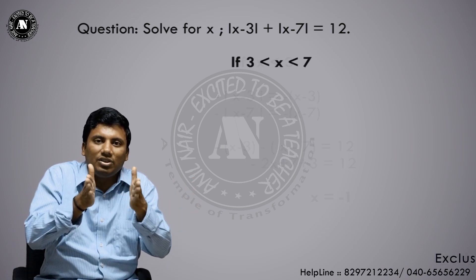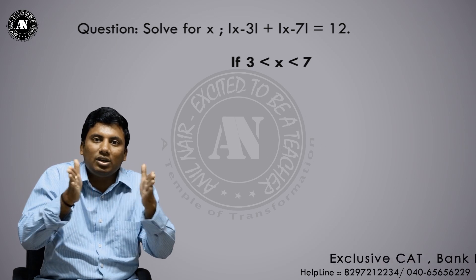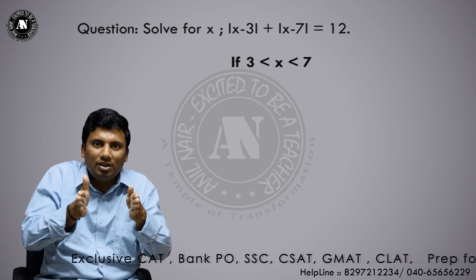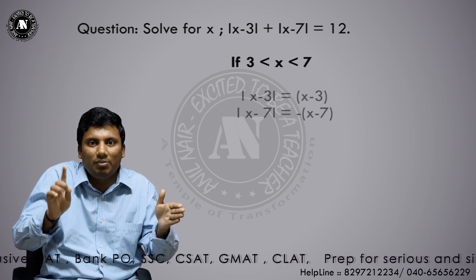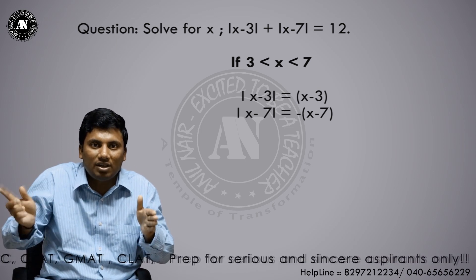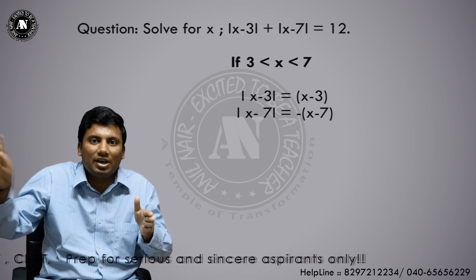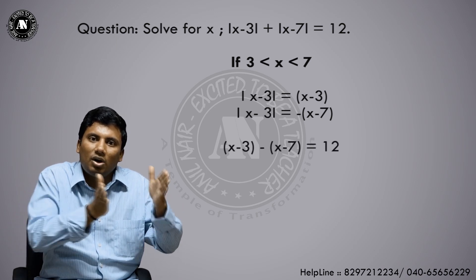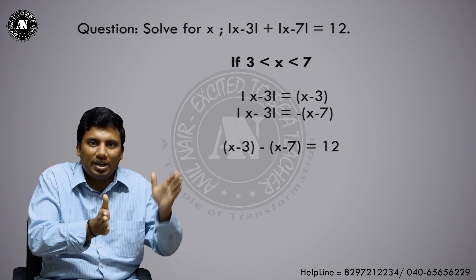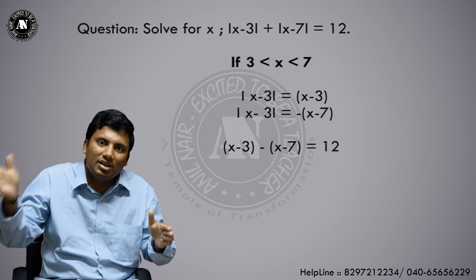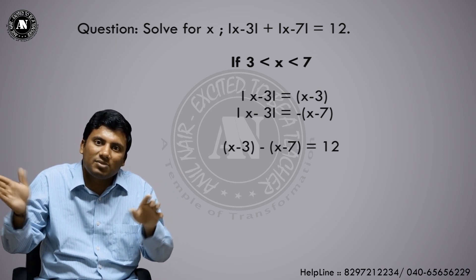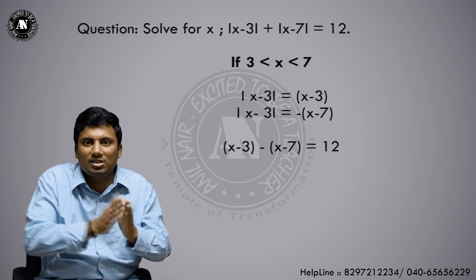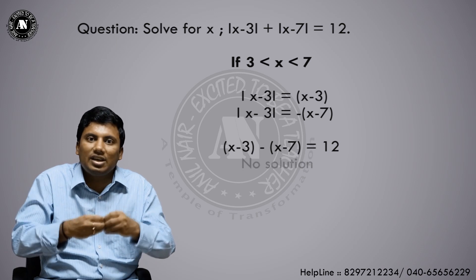Next case: x lies from 3 to 7. If x = 4, mod(4 - 3) = 1. So when x is between 3 and 7, mod(x - 3) becomes (x - 3), and mod(x - 7) becomes -(x - 7). The equation becomes (x - 3) - (x - 7) = 12, which simplifies to 4 = 12. This is an invalid case.